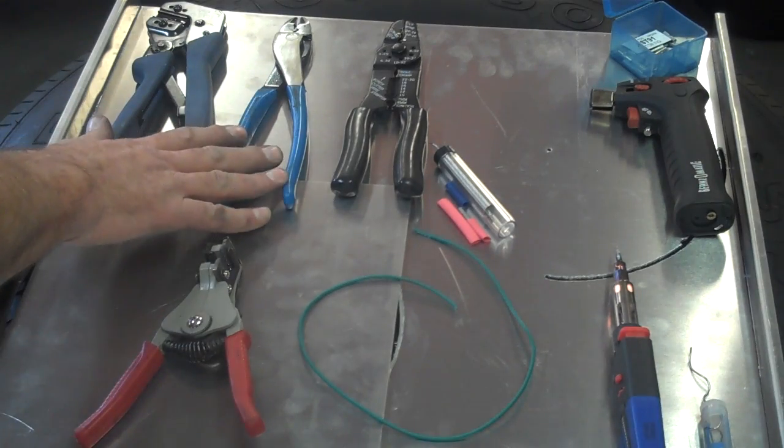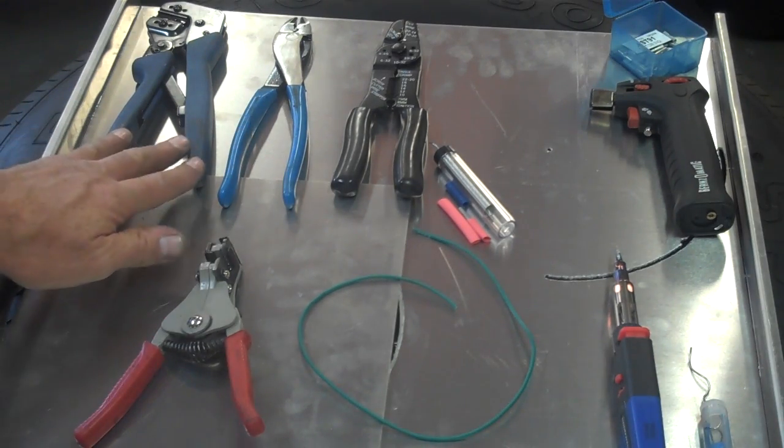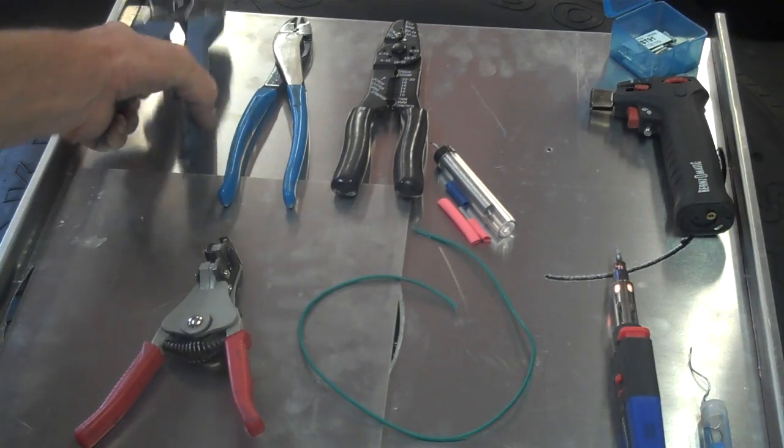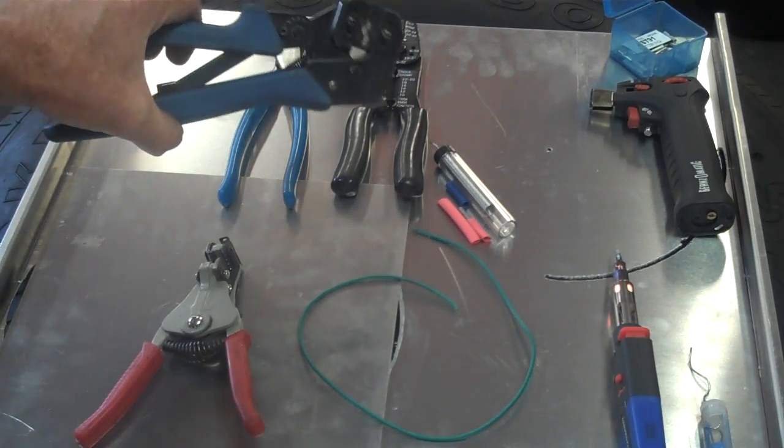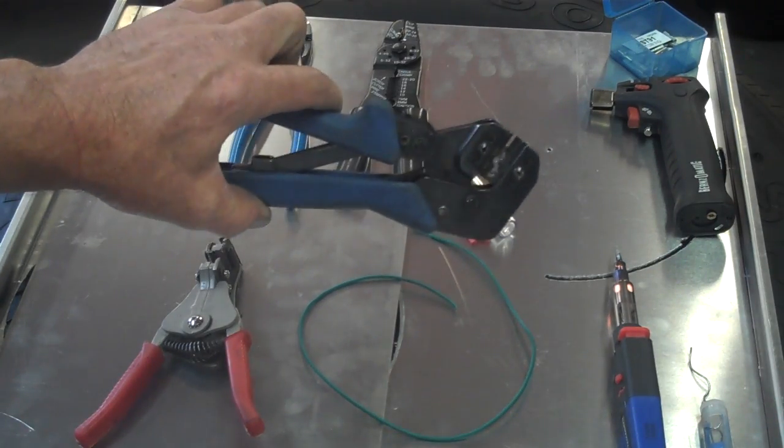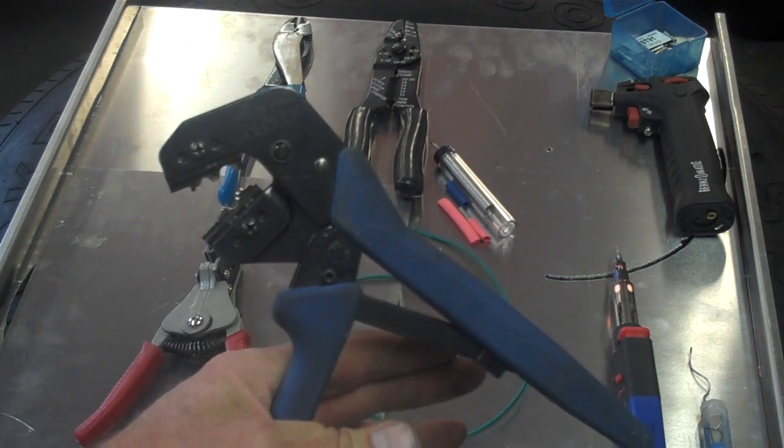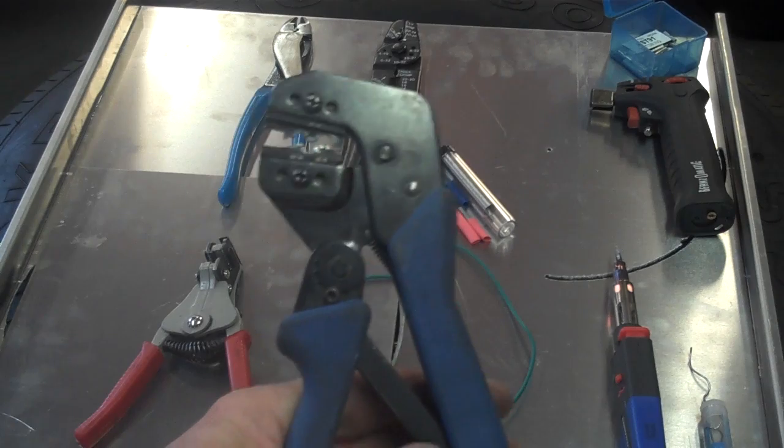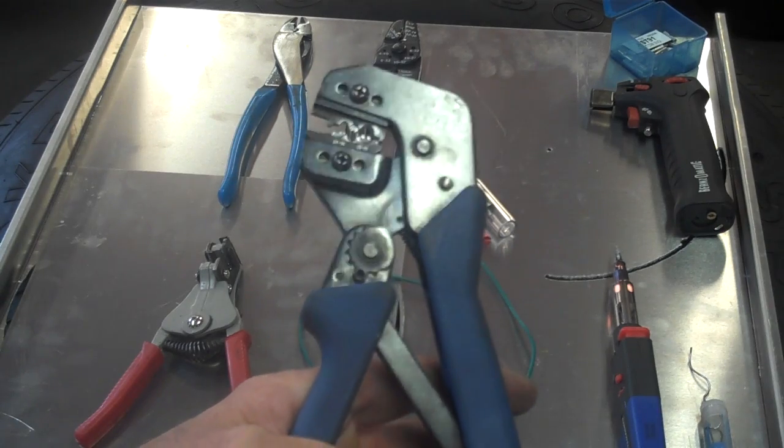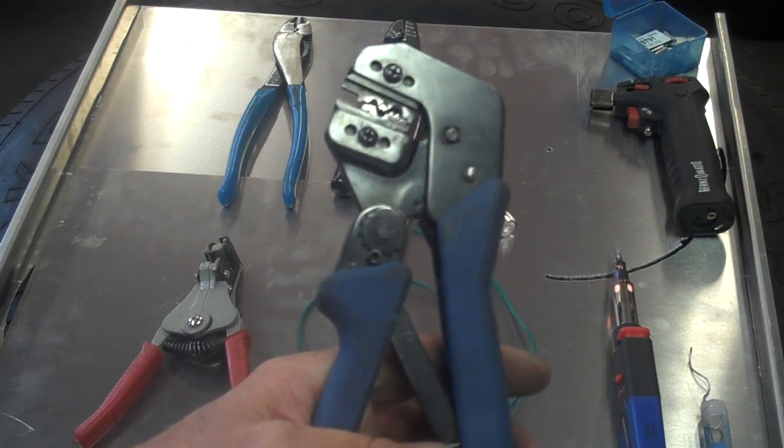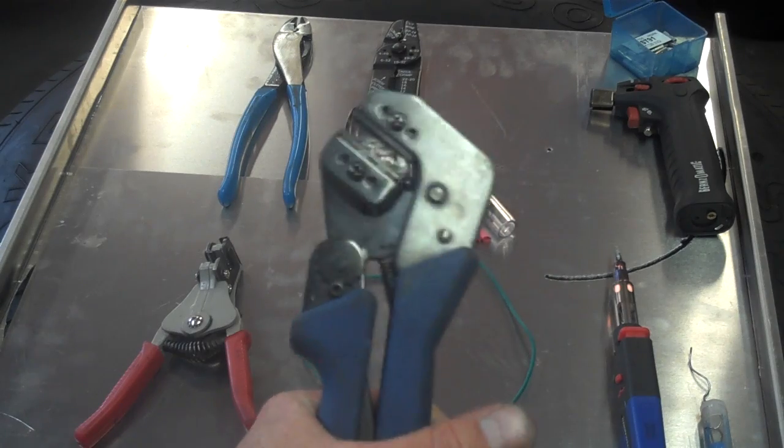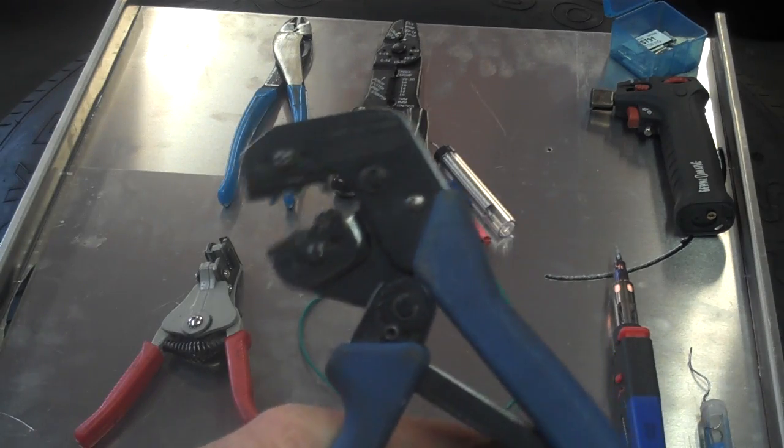Up here are some different types of crimpers. This is a lever-action type crimper that we would use for making a connection when we're dealing with non-insulated terminals. You don't want to use these any time you're working with an insulated terminal because these will just crush the insulation and keep the insulation from sealing against moisture.